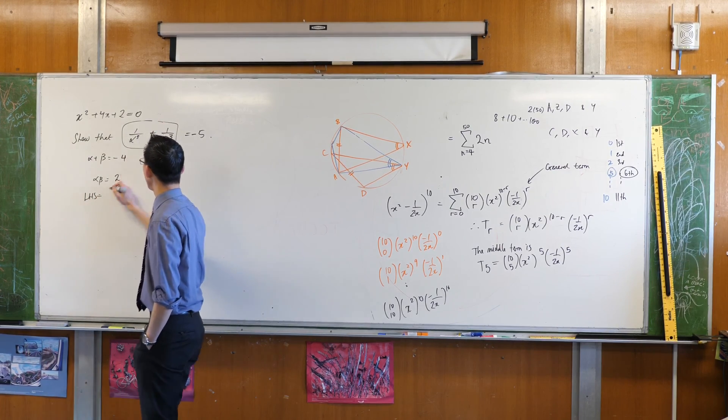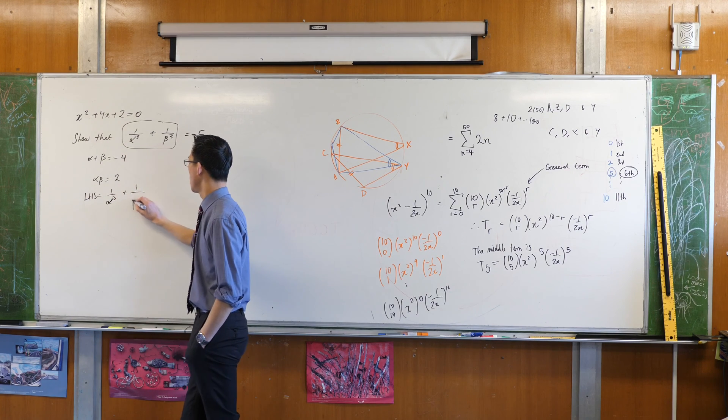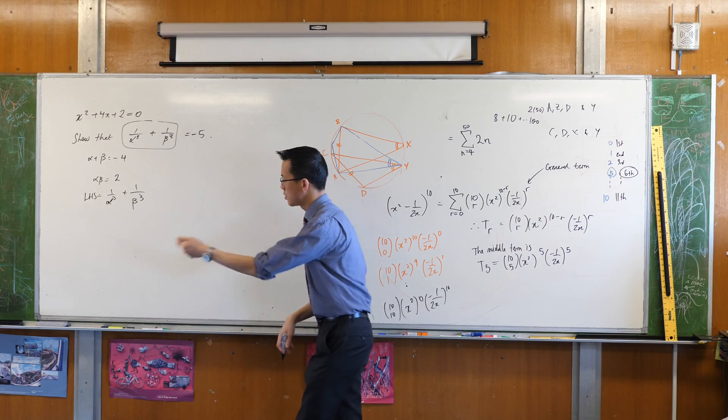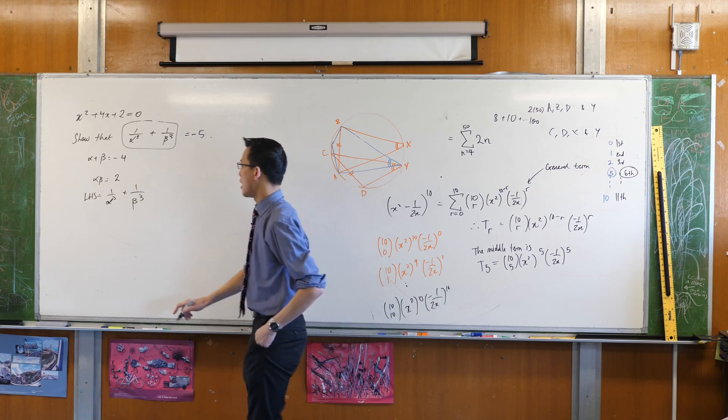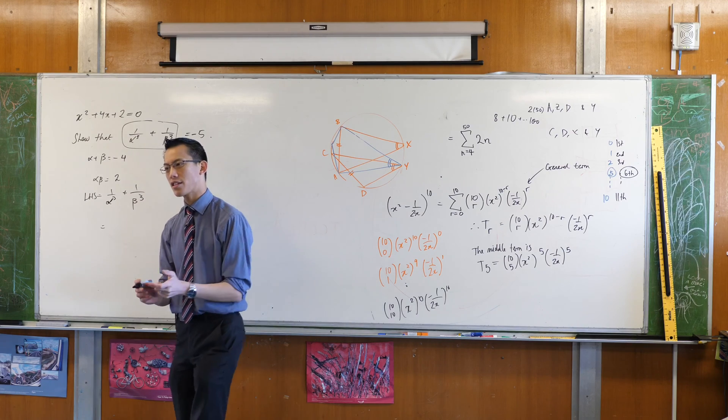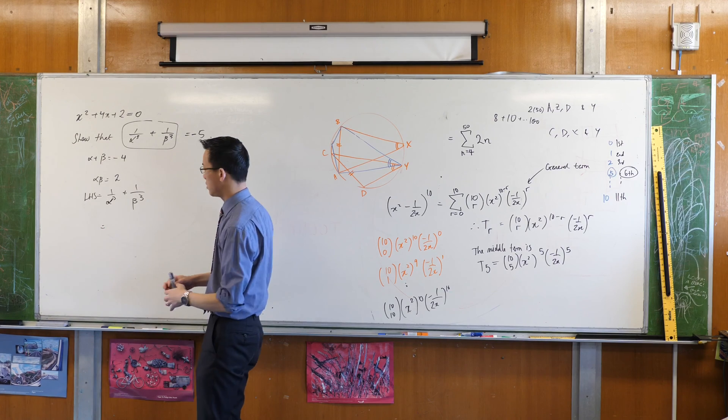So the left-hand side of this thing is 1 on alpha cubed plus 1 on beta cubed. So when I think about how these things are going to go together, when I see a pair of fractions, my instinct is to get common denominators and combine them into one fraction. So let's go ahead and do that.